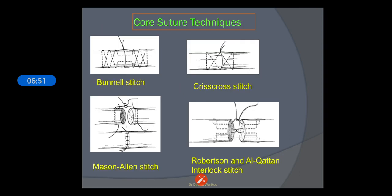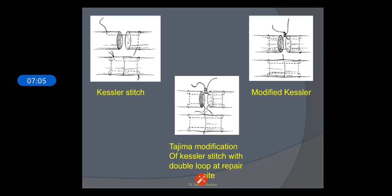The basic core suture techniques include: the Bunnell stitch, the criss-cross stitch, the Mason-Allen stitch, the Robertson and Alcatan interlock stitch, then the Kessler and modified Kessler, and the Tajima modified Kessler stitch with a double loop at the repair site.